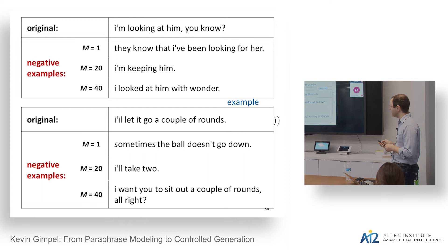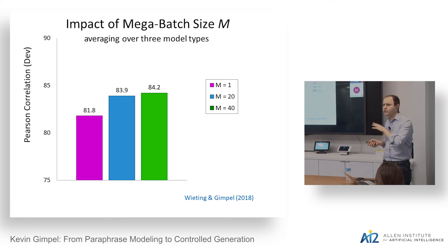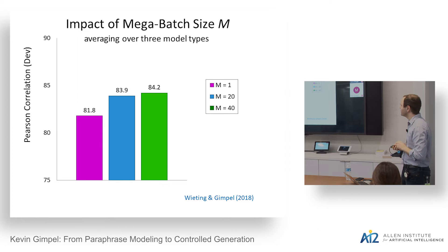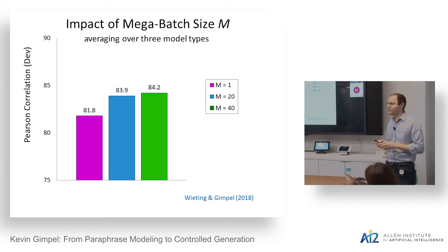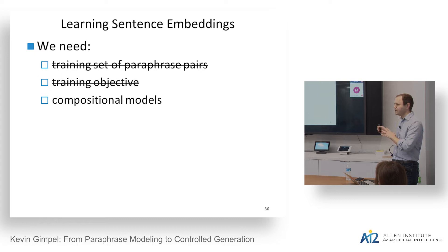There are diminishing returns as you increase M — we find that mega-batch sizes of 20 and 40 are similar, but there's a consistent difference between size 1 and size 20 or 40. This is something to keep in mind if you're doing similar training on noisy positive examples. The number of mini-batches varies based on the setting, usually from 100 to 500.